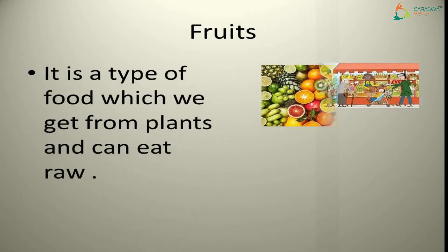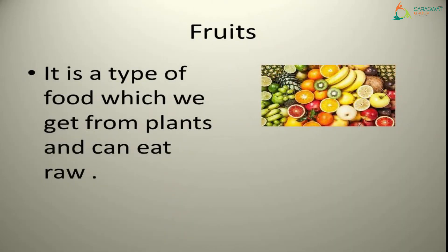Then the next word is fruits. Fruit is a type of food which we get from plants and we can eat it raw as well. Fruit ek food ka type hai jise hum kaccha bhi kha sakte hai aur jo hume plants se milta hai. I know all of you are aware of the meaning of fruit — you all have special favorite fruits like apples, strawberries, grapes, and oranges.